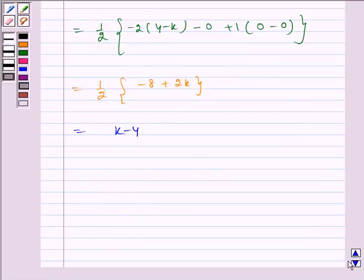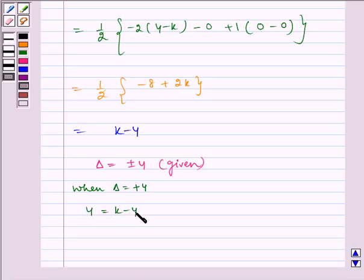So, given to us, area is equal to plus minus 4. Now, when area is equal to plus 4, we get 4 is equal to k minus 4, which implies k is equal to 8.